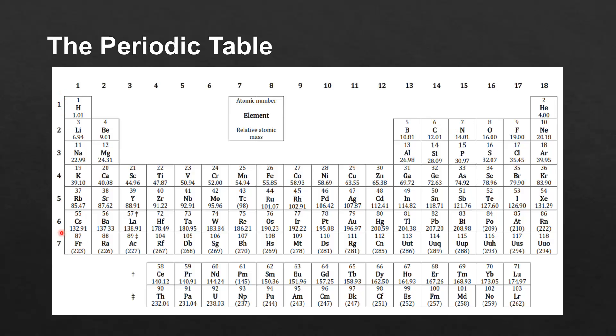The elements are arranged into groups, which are vertical columns, and periods, which are horizontal rows, and we'll look at those in more detail next.